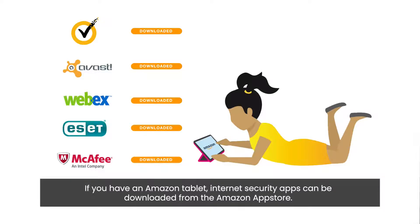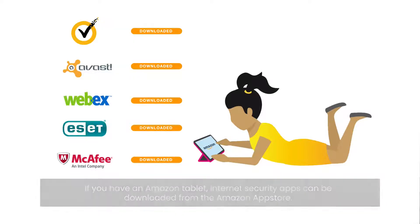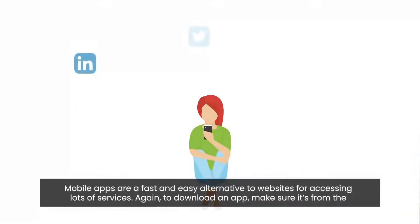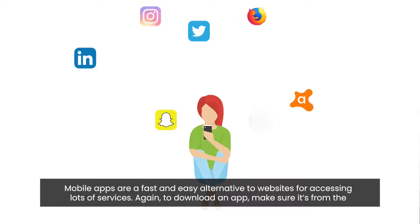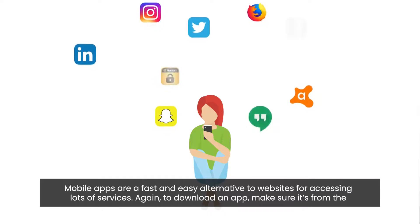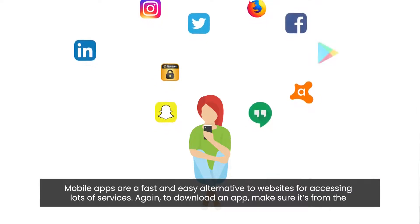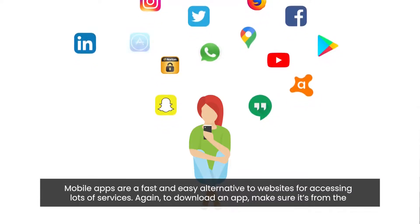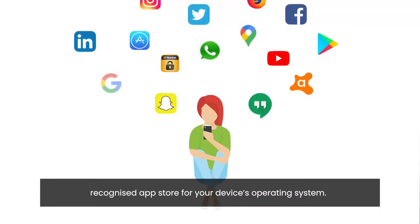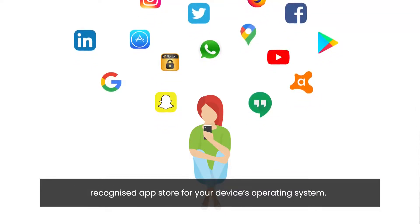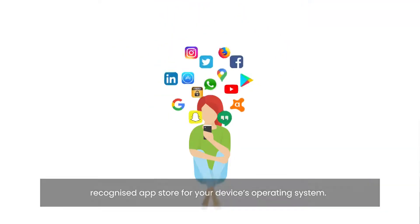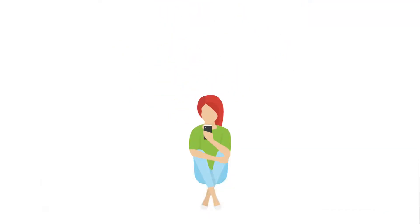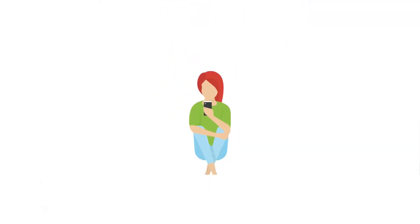Make sure you download the app from the authorised app store for your device. That's either the Google Play Store for Android or the App Store for Apple. If you have an Amazon tablet, internet security apps can be downloaded from the Amazon App Store.